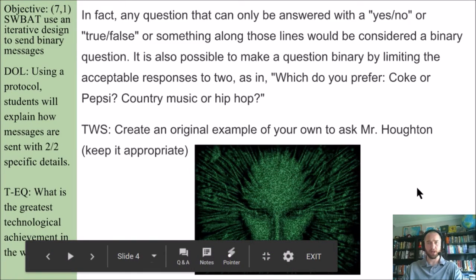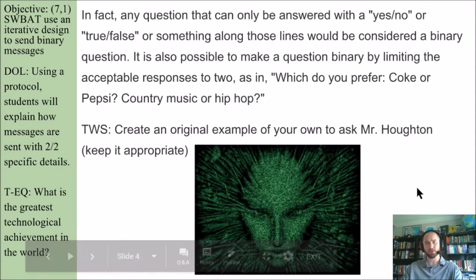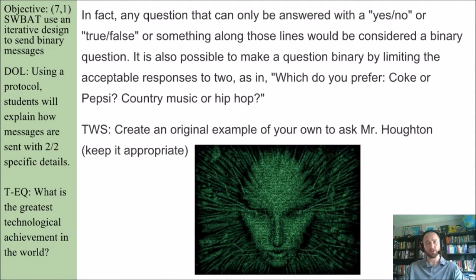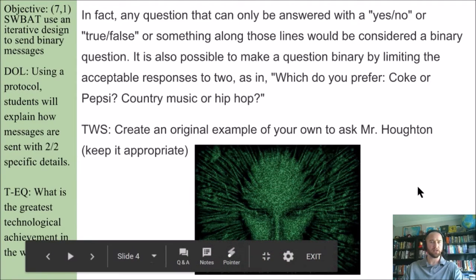It is also possible to make a question binary by limiting the acceptable responses to two — as in, which do you prefer: Coke or Pepsi, country music or hip-hop? Think-pair-share: create an original example of your own to ask Mr. Houghton.